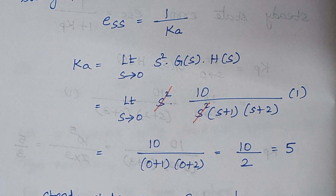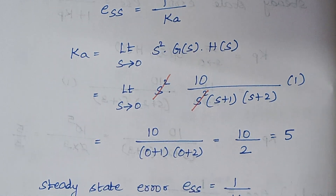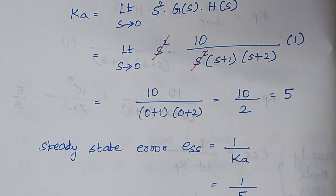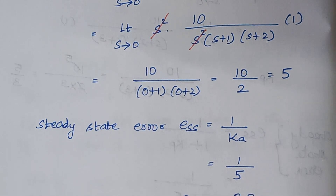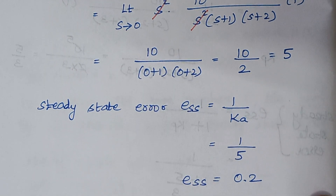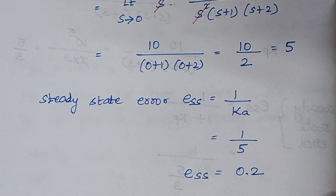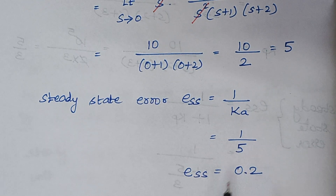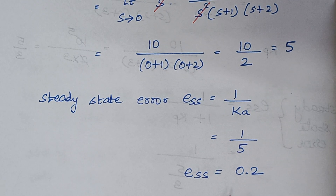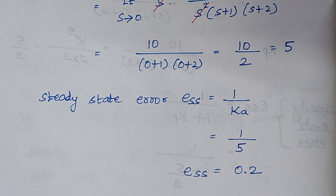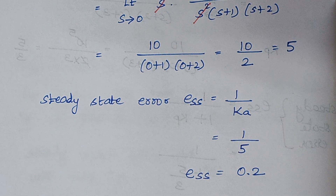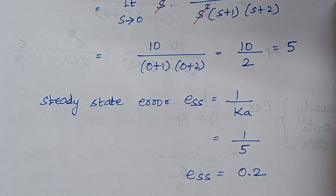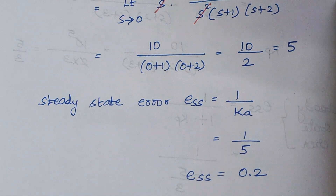The steady state error is given by 1/kA. Substituting kA equals 5 gives ESS equals 1/5, and finally the steady state error is 0.2. Hope you people understand these problems. Thank you.